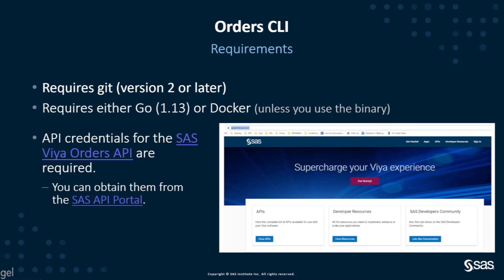The Orders CLI tool is very easy to use. The only part that can be a little more complex is configuring the authentication, because of course you need to be authenticated to access the order artifacts. There are some version requirements depending on whether you use the Go version or the Docker version of the tool, but the biggest requirement is to obtain the credentials to use the tool.